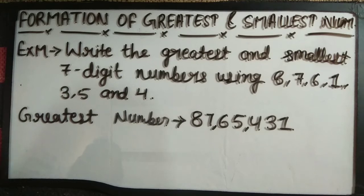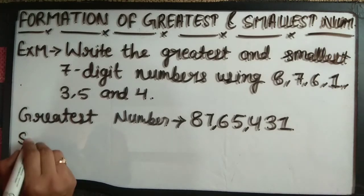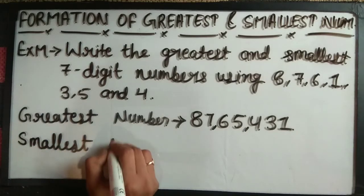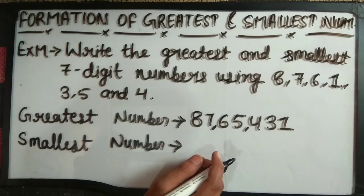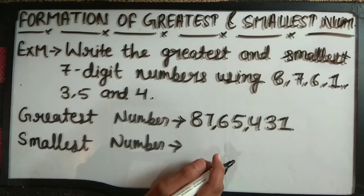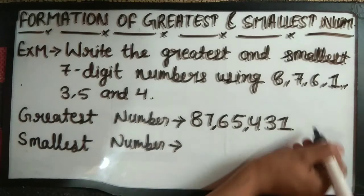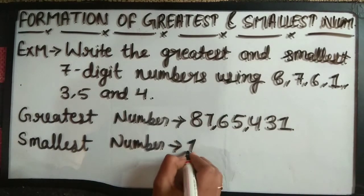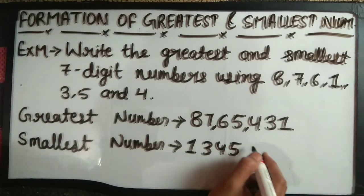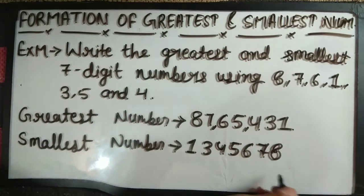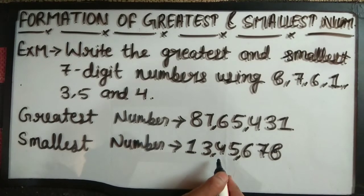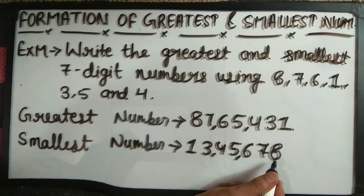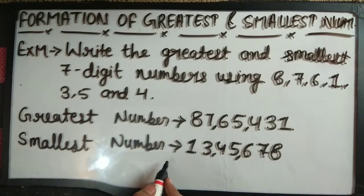To get the smallest number, we arrange the given digits in the ascending order. The smallest number is 1, then 3, 4, 5, 6, 7 and 8. We will put a comma here and here. So this is 13,45,678. This is our smallest number.